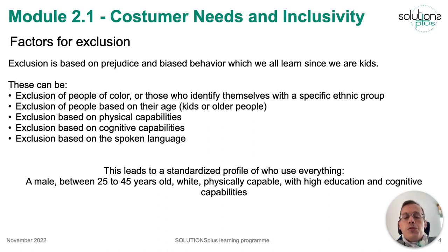You have to be aware that all of us create this idea of what is the standard user for our transport networks, our cities, and many more things. Usually he is a male between 25 and 45 years old. He is white, he is physically capable, usually with higher education and cognitive capabilities. And you have to be ready to challenge this idea.